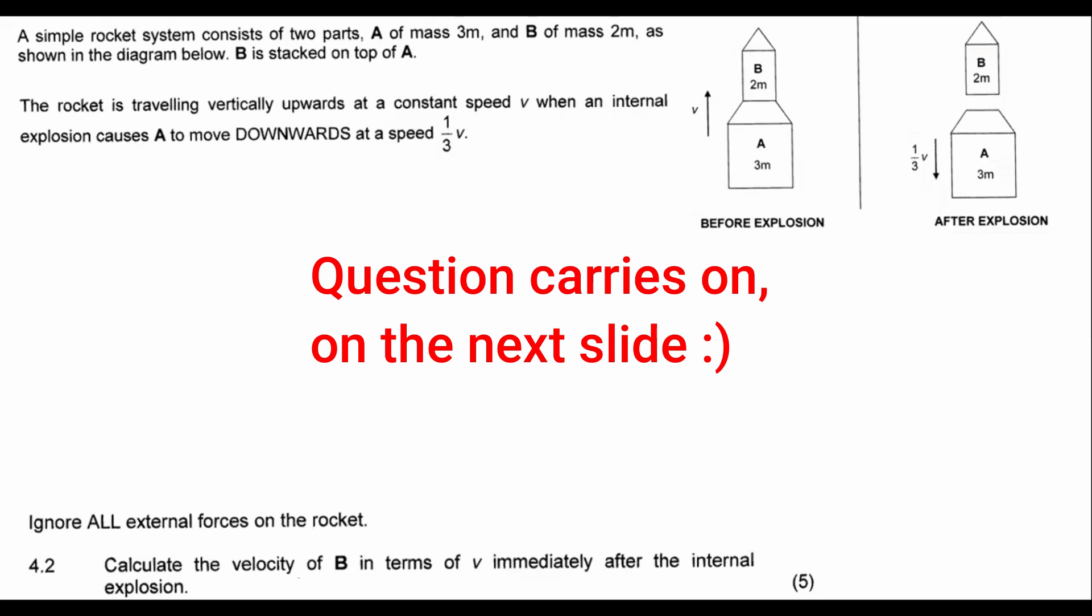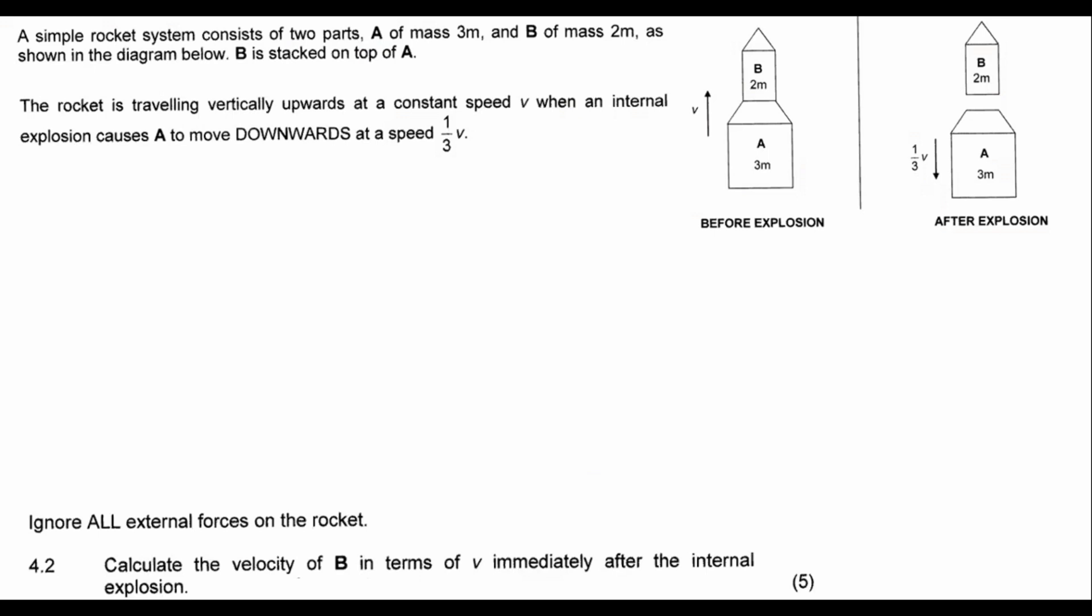So what we have here is they tell us that we have a rocket system consisting of two parts, A and B, as shown in the diagram. The rocket is traveling vertically upwards at a constant speed of V when an internal explosion causes A to move downwards at a speed of a third V.